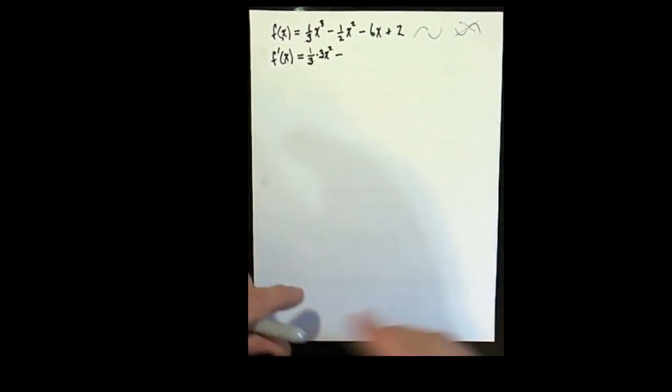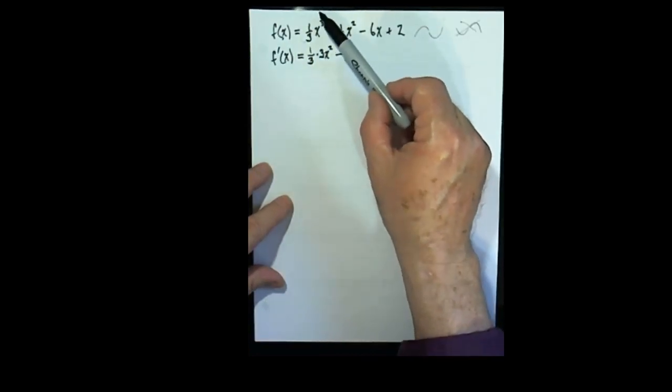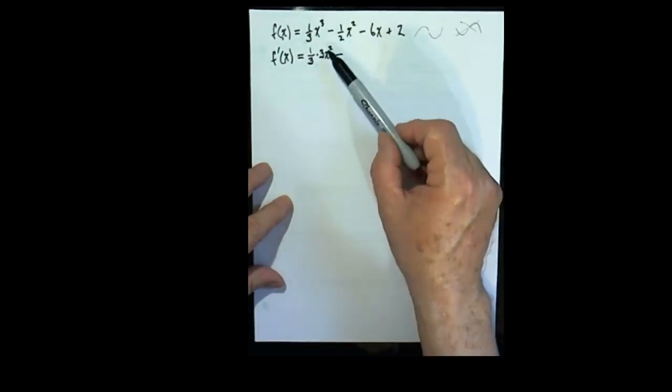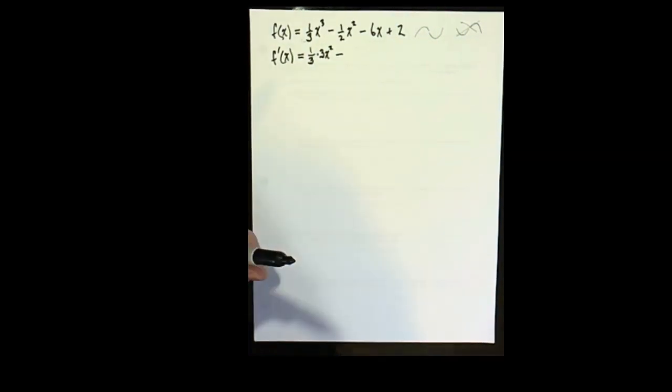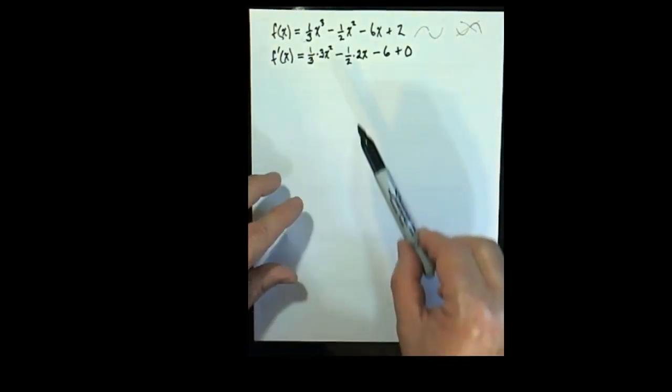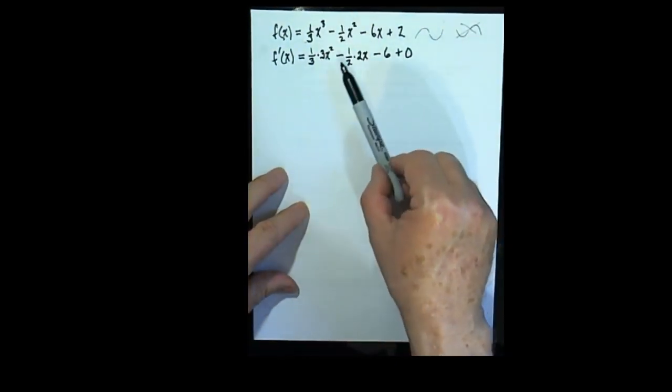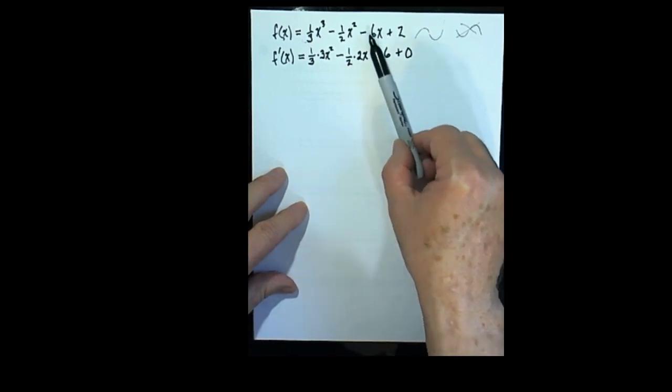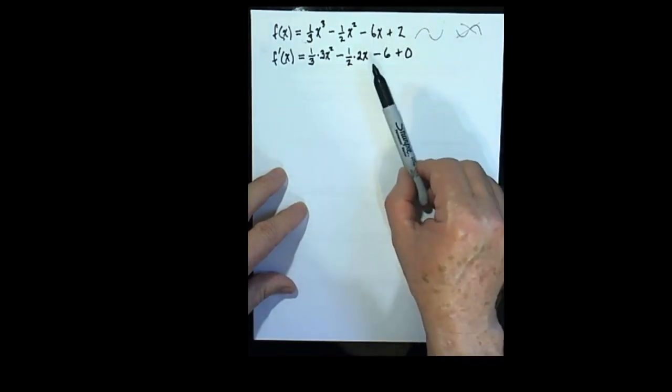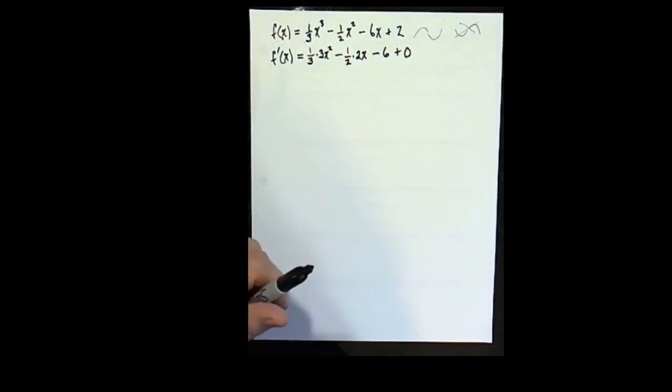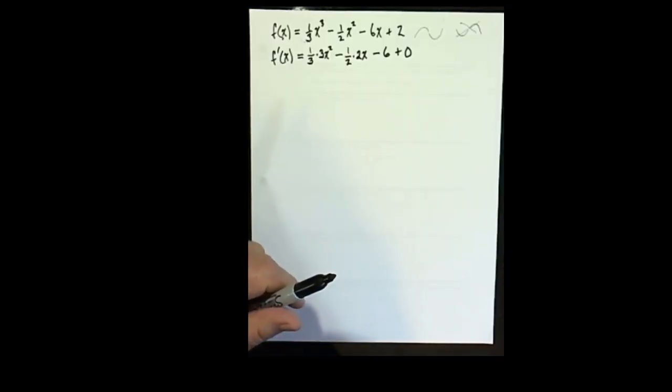The derivative of the first part will be one third times the derivative of x cubed, which is 3x squared. So completing the derivative, the derivative of one half x squared is one half times 2x, and the derivative of 6x is just minus 6, and the derivative of 0 is 0. Let's clean that up with a little bit of algebra.